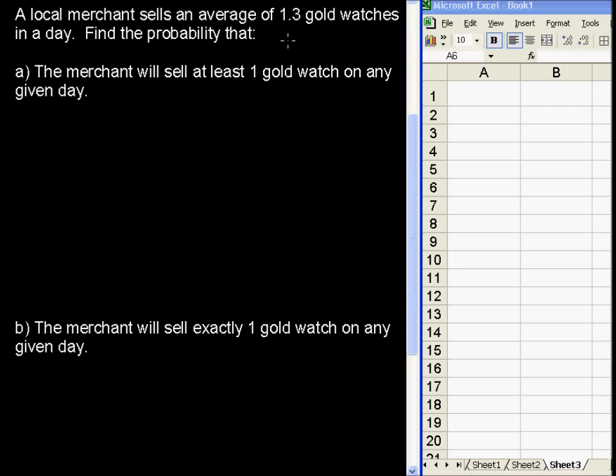A local merchant sells an average of 1.3 gold watches in a day. Find the probability that the merchant will sell at least one gold watch on any given day.